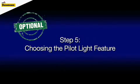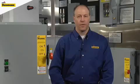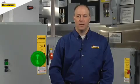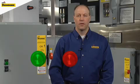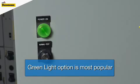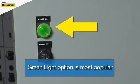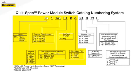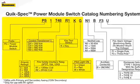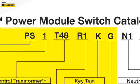The pilot light on feature is available with three different colors to choose from: green, red, and white. This feature is a simple way for anyone to know that the power is energized to the unit when the light is glowing. We will simply add the G code into our example part number configuration.